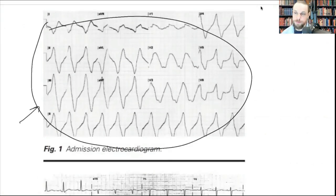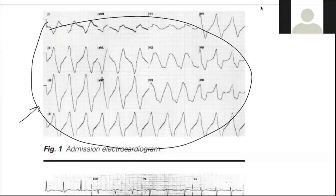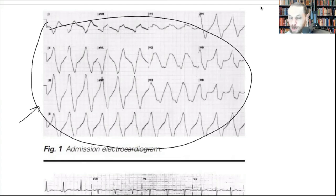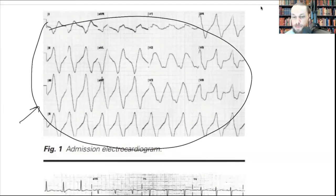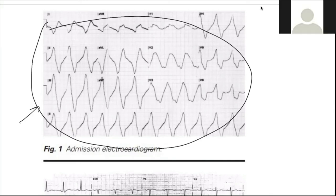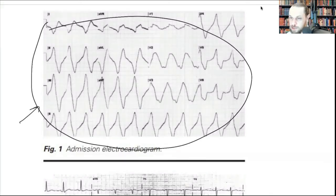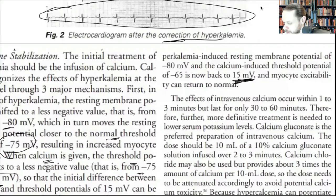Calcium only lasts 60 minutes to two hours in the body, so after giving calcium you need to remove the excess potassium. You can give insulin and bicarb, or perform dialysis — these will sequester the potassium into cells and then mobilize it out. First-line is calcium; secondary drugs are insulin, sodium bicarb, and dialysis.